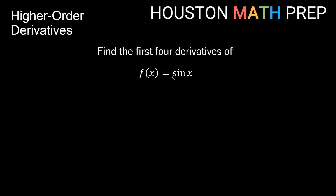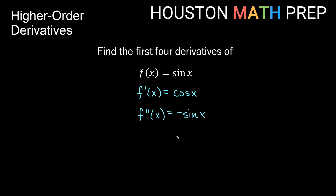Let's do an example with trig functions. We have f(x) = sin(x) and we'll find the first four derivatives. The first derivative f prime of x, the derivative of sin(x), is cos(x). Looking at f double prime of x, we take the derivative of cos(x), which is -sin(x). Our third derivative is the derivative of -sin(x). Keeping the negative one out front, the derivative of sin(x) is cos(x), so we get -cos(x) for the third derivative.